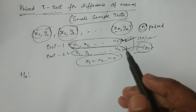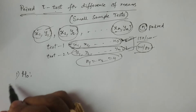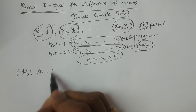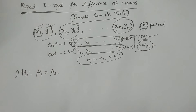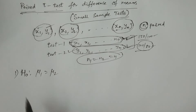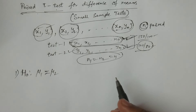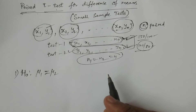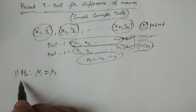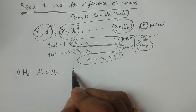Now coming to the first part — H₀, the null hypothesis. We always consider μ₁ is equal to μ₂. That is, coaching is not effective. If coaching is effective, the students' results should be improved. If the treatment is effective on the patients, then either increment or decrement in any particular reading is observed. Therefore, whatever treatment or coaching we have given is not effective — the results after coaching and before coaching are all the same, there is no difference. That is the reason why H₀ is always μ₁ = μ₂, that is, the two population means are equal.